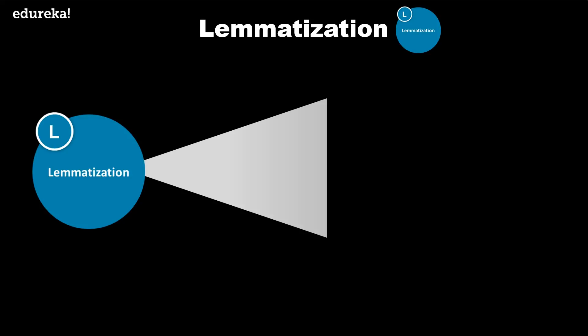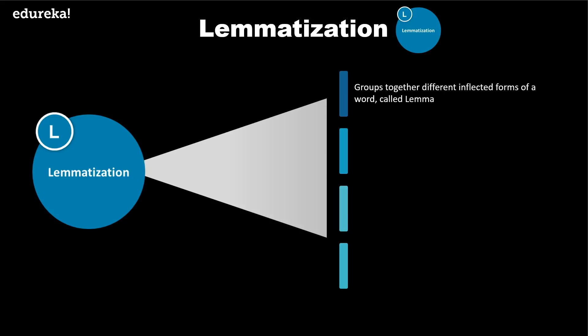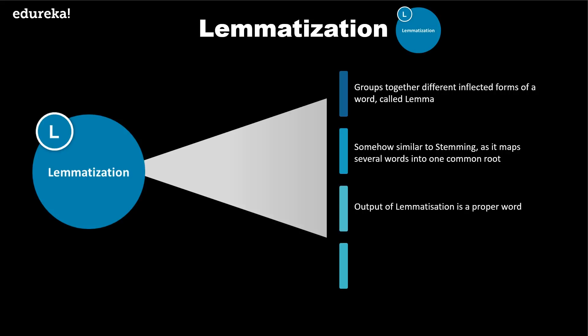Lemmatization, unlike stemming, reduces inflected words properly, ensuring that the root word belongs to the language. In lemmatization, the root word is called a lemma. A lemma is the canonical form, dictionary form, or citation form of a set of words. It takes into consideration the morphological analysis of the words, and it is necessary to have detailed dictionaries which the algorithm can look through to link the form back to its lemma. For example, a lemmatizer should map 'gone', 'going', and 'went' into 'go'. Python NLTK provides WordNet lemmatizer, which uses the WordNet database to look up lemmas of words.